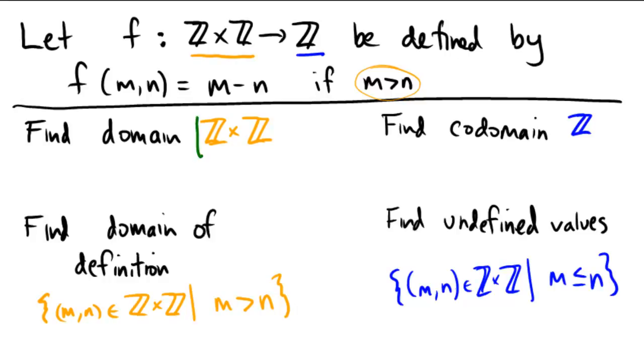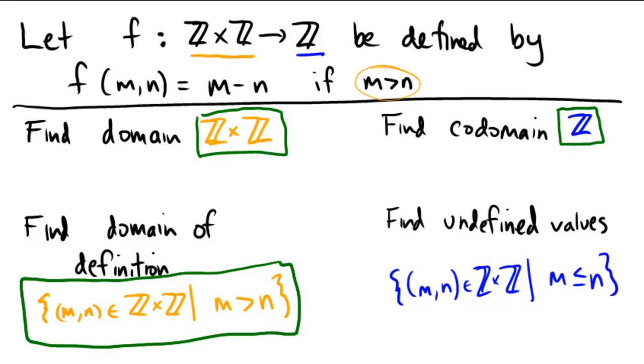As our final answers, the domain of this partial function is the space written on the left. The codomain is the space written on the right. The domain of definition are the values for which we are actually defined, and that's restricted by m bigger than n.